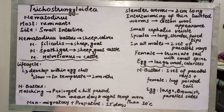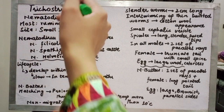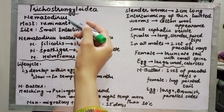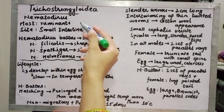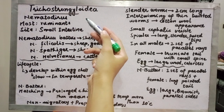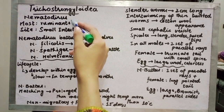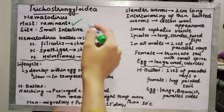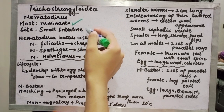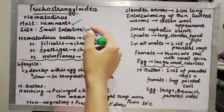Assalamu alaikum. Today's topic is the Trichostrongylidae family — Nematodirus. Nematodirus is a parasite of ruminants. The site of infection in ruminants is the small intestine.